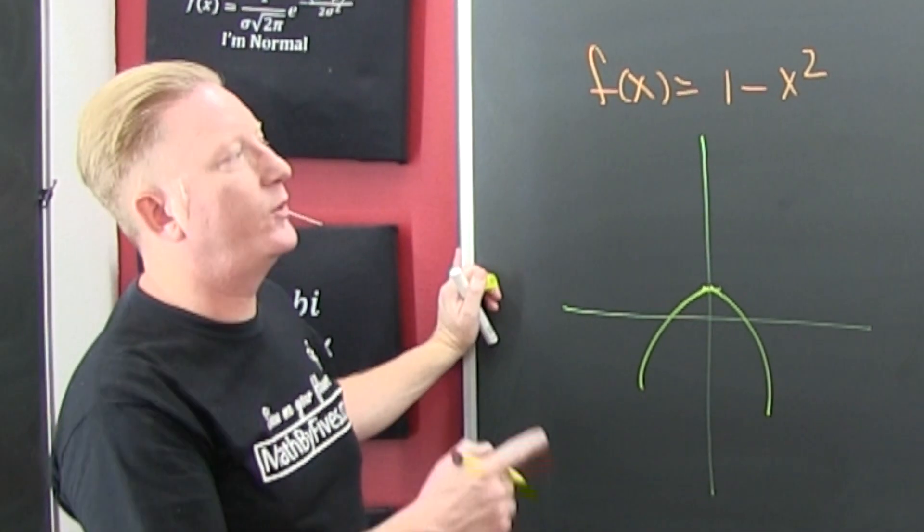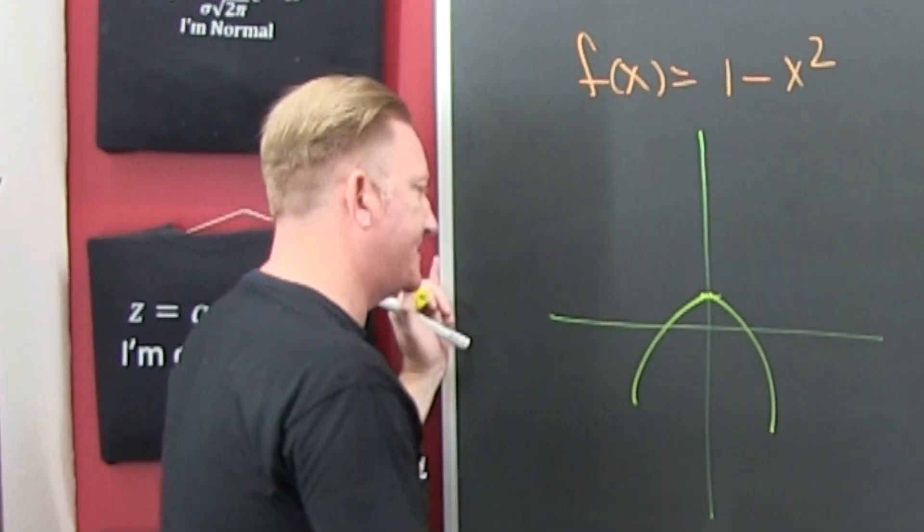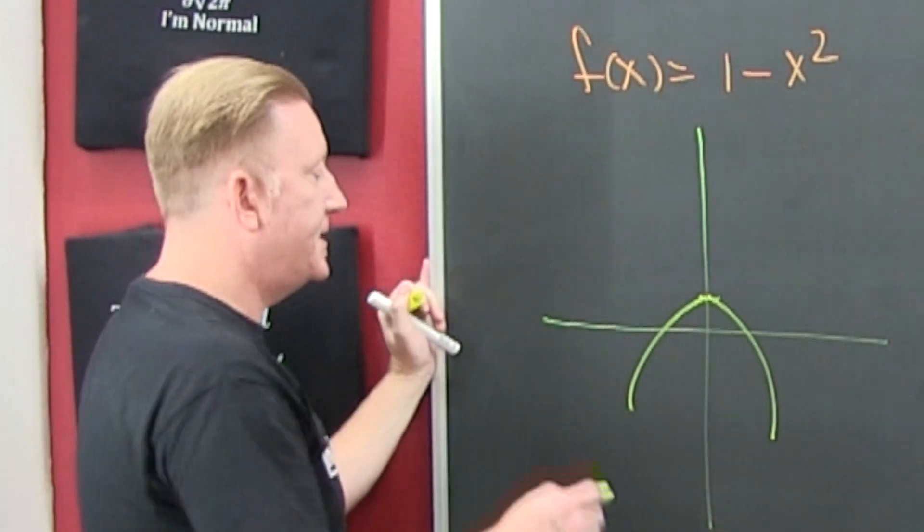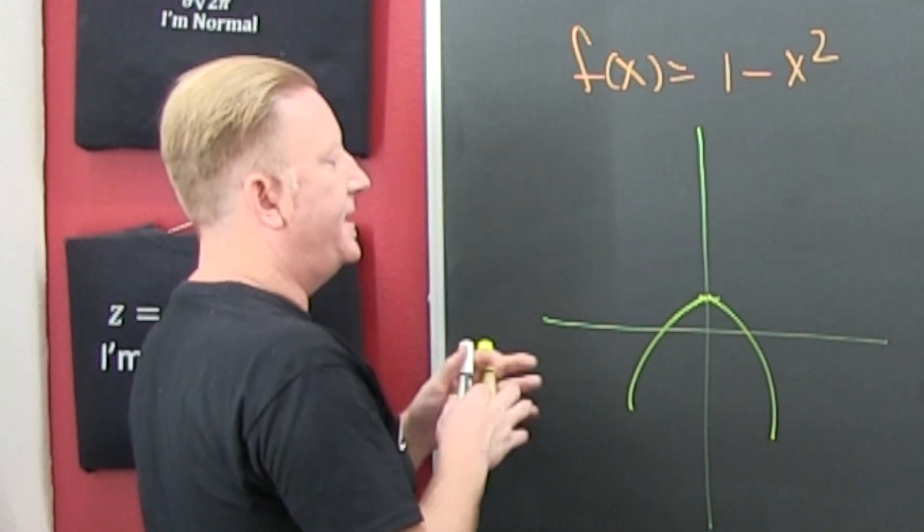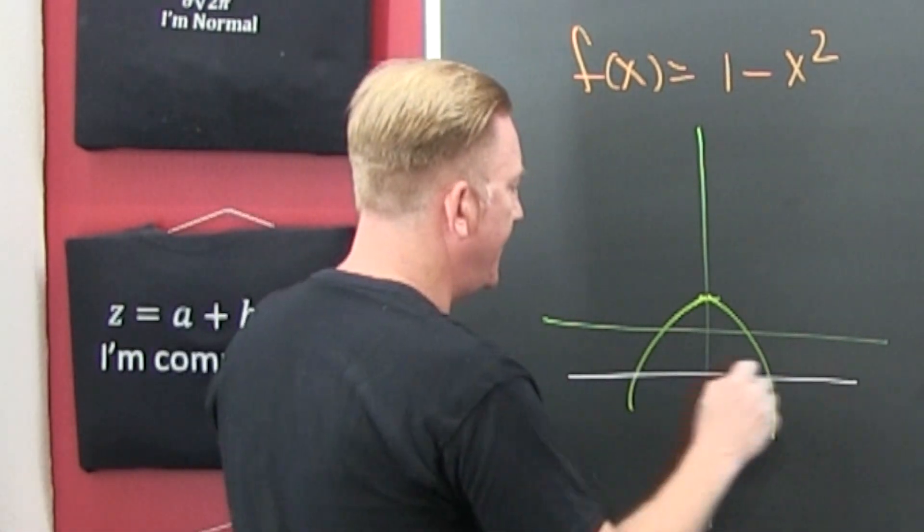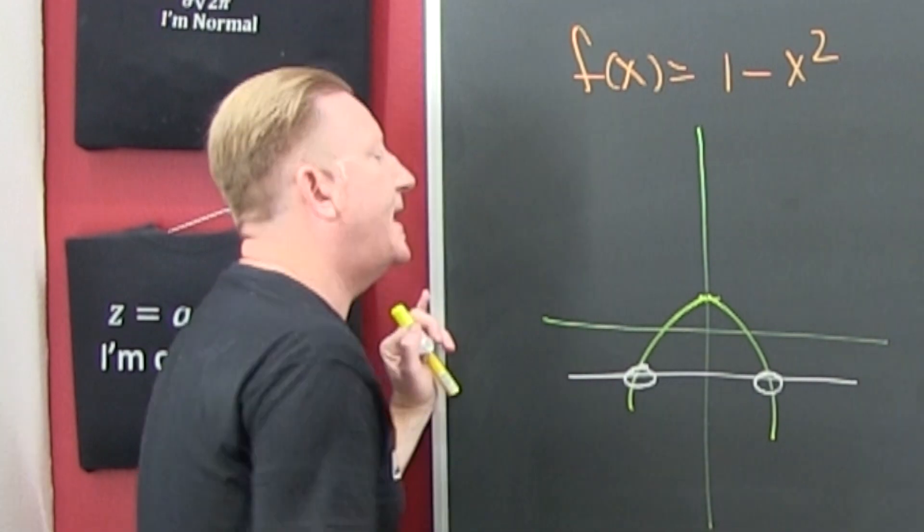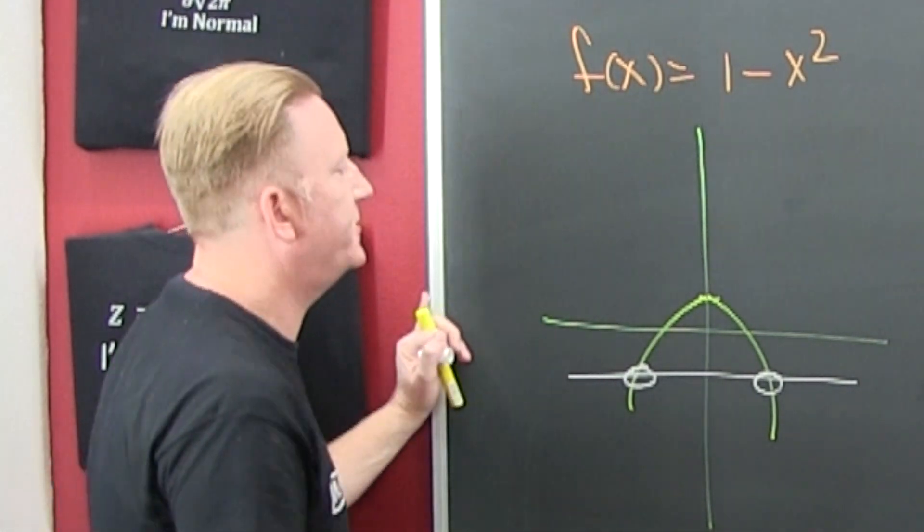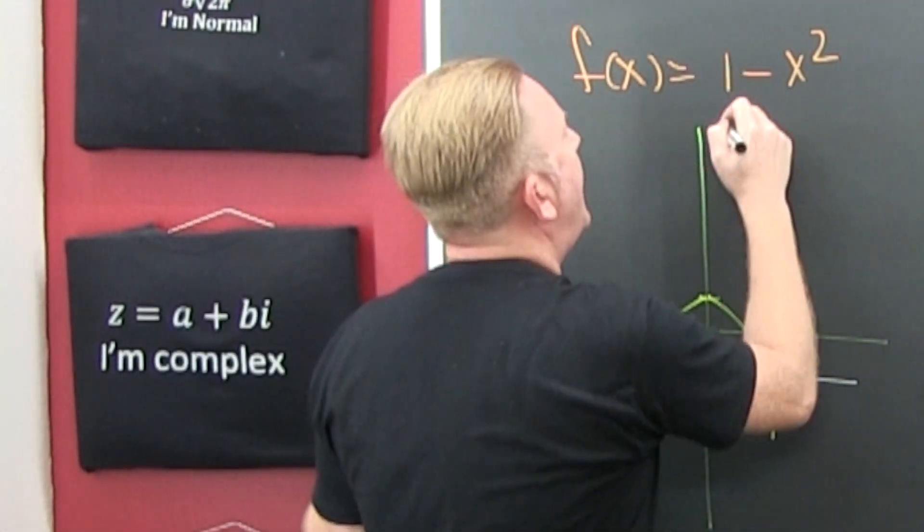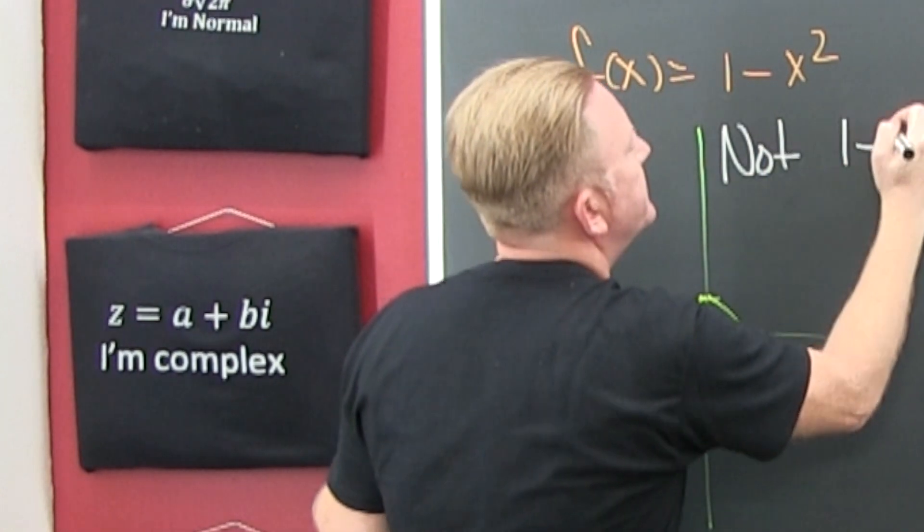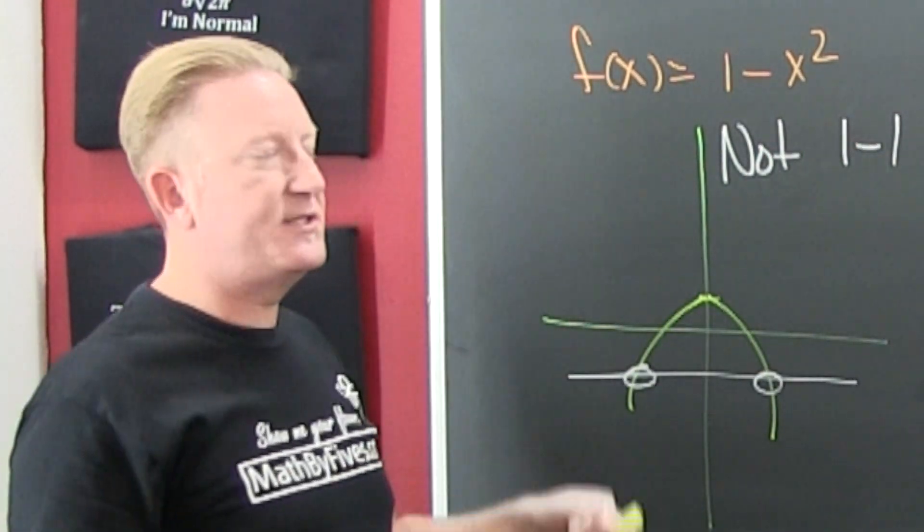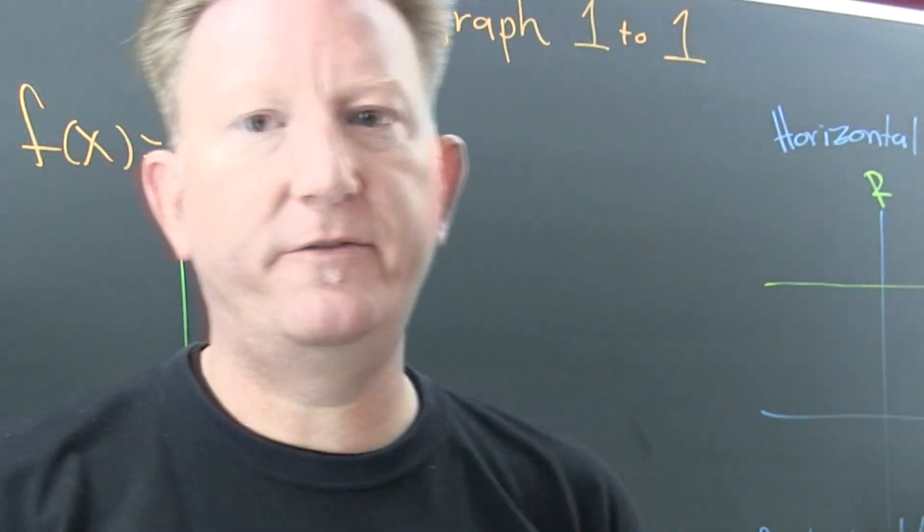What I want to do is use that horizontal line test. So if I can find a horizontal line that crosses more than one spot, like there and there, that horizontal line crosses two spots. This is not one-to-one. That's an abbreviation for one-to-one, it's not the absolute value of a minus sign.